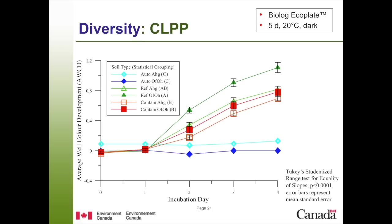We looked at community-level physiological profiling (CLPP), which uses a 96-well plate where each well holds about 300 microliters. The plate has 31 different substrates in triplicate and three blank wells. We measure average well-color development — if a community can use a substrate, the well changes color. The reference OFOH had the highest average well-color development, utilizing the most substrates, whereas both contaminated horizons were very similar to the reference AHG horizon. Autoclave samples didn't go above baseline.